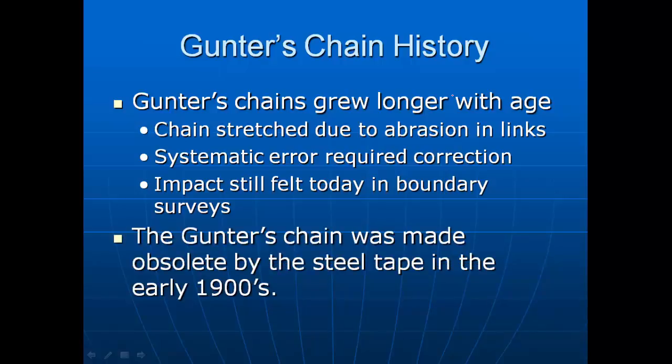The Gunter's chain was effectively made obsolete by the steel tape in the early 1900s. It was in the early 1900s that our understanding of metallurgy allowed manufacturers to make spring-steel tapes — a steel tape that could flex and would only break in very extreme conditions. Prior to that time, we didn't have the ability to make spring steel because our understanding of metals and alloying had not advanced far enough.